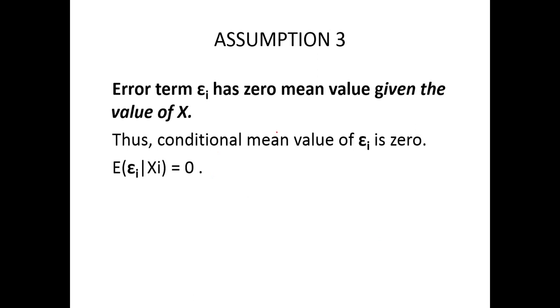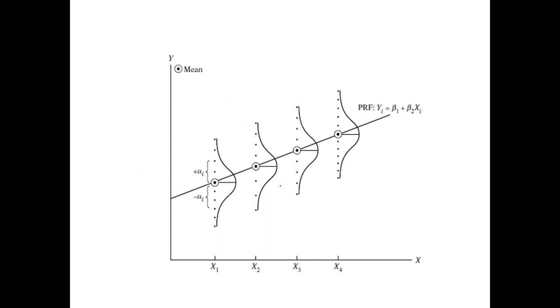Assumption number 3: the error term has zero mean given the value of x. So given the value of x, which ranges from i equal to 1 to n, the expected value or the mean value of the error is 0, which is to say that the error term is equally distributed across this line. So there is a positive term and there is a negative term, and they cancel out.